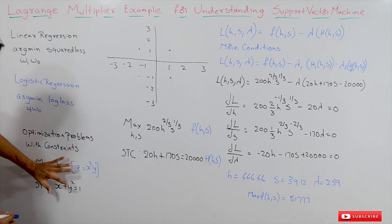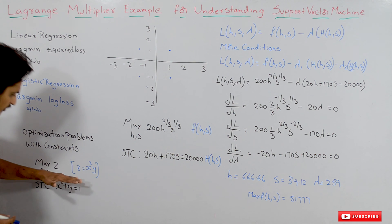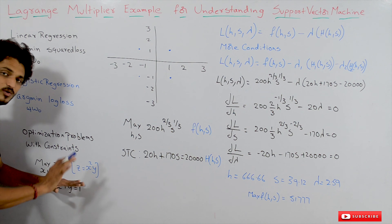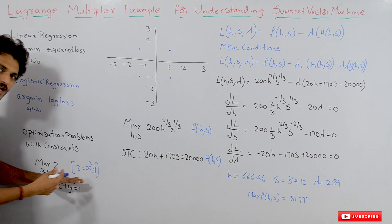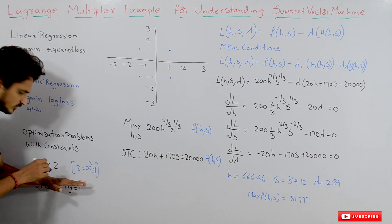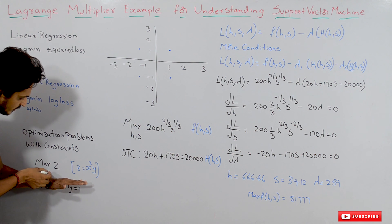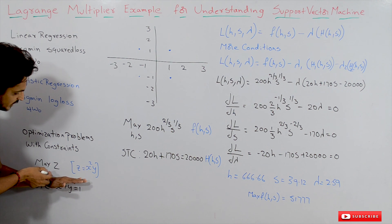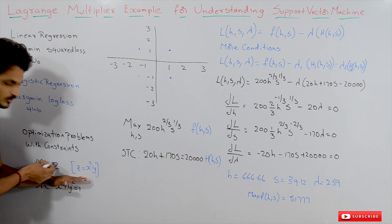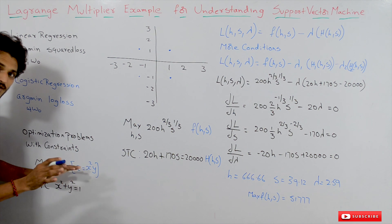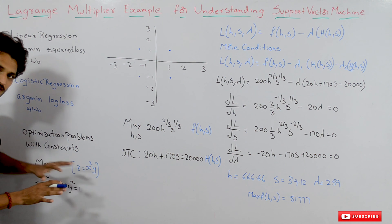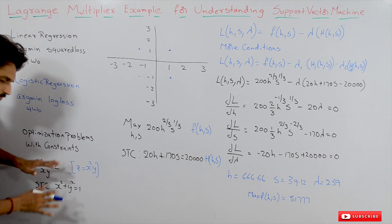Without this condition, let's have a look at the graphical intuition — how our objective function, that is the optimization function, looks like. We will just have a graphical intuition so that we will have a better understanding of our optimization problem.